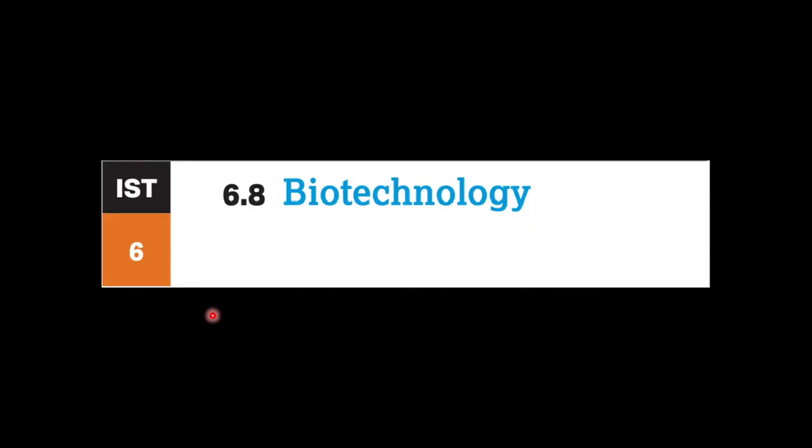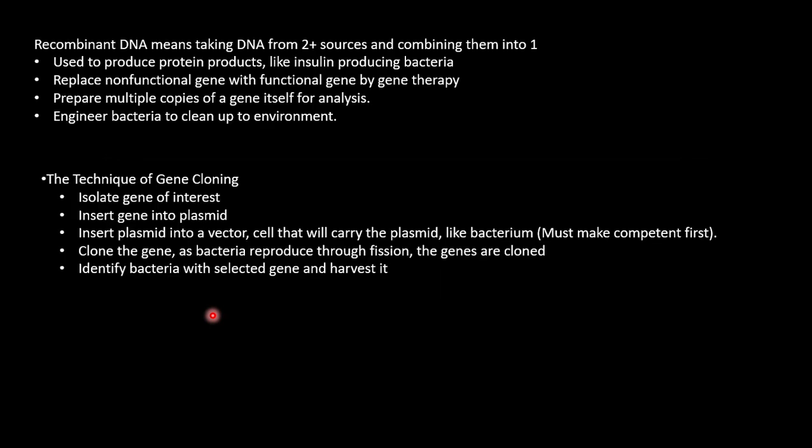Biotechnology. Recombinant DNA means taking DNA from two or more sources and combining them into one. It's used to produce protein products like insulin-producing bacteria. If you put DNA into that bacteria, it will actually produce insulin for you. You replace a non-functional gene with a functional gene by gene therapy. You prepare multiple copies of the gene itself for analysis and then engineer bacteria to clean up the environment. These are all different ways you can use biotechnology. The technique of gene cloning: first, you isolate the gene of interest, insert the gene into a plasmid, insert the plasmid into a vector, the cell will carry the plasmid like bacteria—you must make it competent first. Clone the gene as bacteria reproduce their fission and the genes are cloned, and then identify bacteria with selected gene and harvest it.